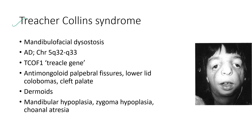Next is Treacher Collins syndrome, also known as mandibulofacial dysostosis. It is an autosomal dominant condition. The clinical features include anti-mongoloid slanting palpebral fissures, lower lid colobomas, and cleft palate. It can also be associated with dermoids, mandibular hypoplasia, zygomatic hypoplasia, and choanal atresia.